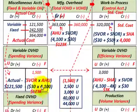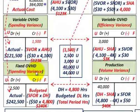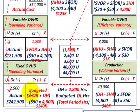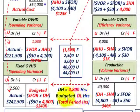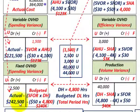Now for fixed overhead — the spending variance. Take actual fixed overhead of $242,500 and compare to the budgeted amount: SFOR $50 × 4,800 denominator hours = $240,000. We overspent by $2,500, so we debit the fixed overhead spending variance by $2,500 — an unfavorable amount.